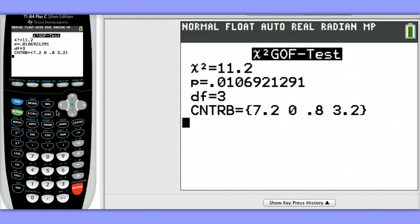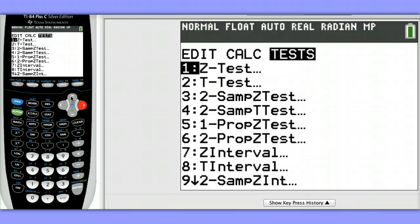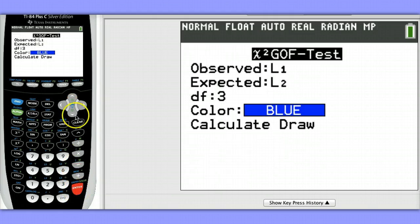We could also draw the chi-squared distribution for this particular problem. To do that, hit Stat. Once again, go to Test. I'm going to hit the up arrow because that will get me to chi-squared goodness of fit a little faster. And then instead of choosing Calculate, let's choose Draw.